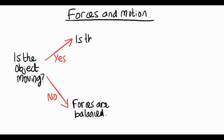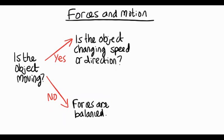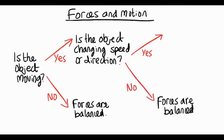If it is moving, then we need to ask about the movement. Is the object changing speed or is it changing direction? Yes or no? If the object is not changing speed or direction, we say it's got uniform motion, and the forces acting on it must be balanced again.